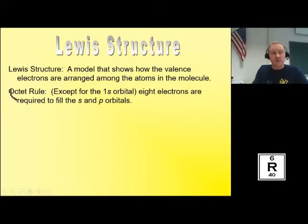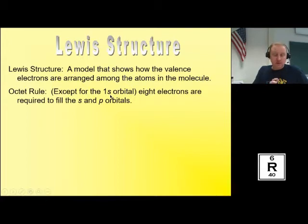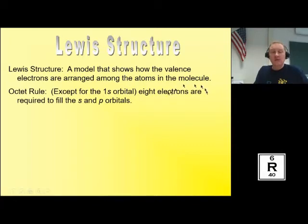When we do Lewis structures, they follow the octet rule. Atoms will try to get eight valence electrons around them — that's the most stable configuration — except for the 1s orbital atoms. Hydrogen and helium are in the first period, so the noble gas configuration for them is helium. They are only going to get two valence electrons around them ideally. So hydrogen's stable condition will be a helium configuration — two valence electrons. Everybody else will want eight valence electrons to fill up those S and P orbitals.